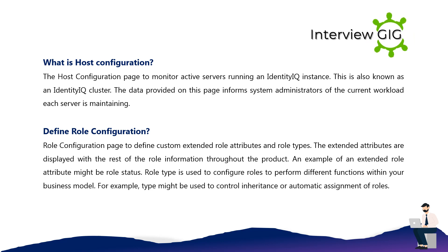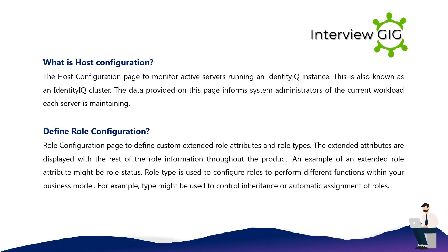Role Configuration — use the Role Configuration page to define custom extended role attributes and role types. The extended attributes are displayed with the rest of the role information throughout the product. An example of an extended role attribute might be role status. Role type is used to configure roles to perform different functions within your business model; for example, type might be used to control inherent or automatic assignment of roles.